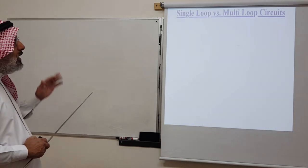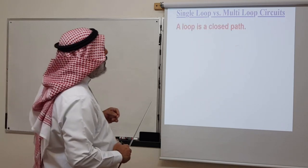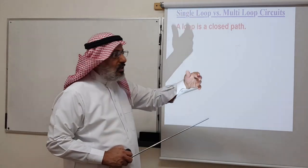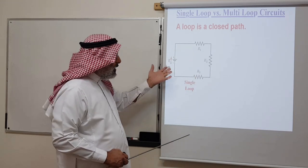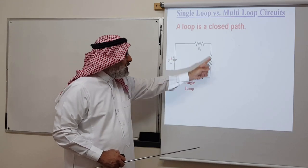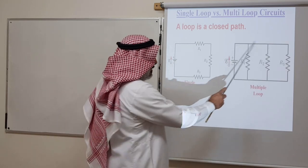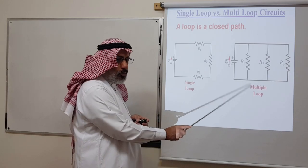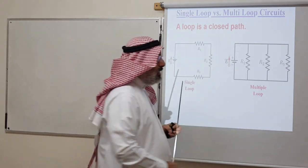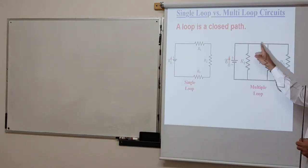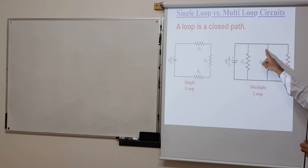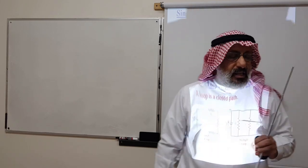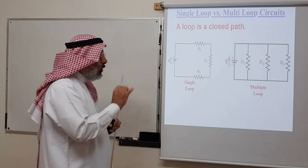Let's distinguish between single-loop and multi-loop circuits. A loop is any closed path in a circuit. A single-loop circuit has one single closed path for current to flow. A multi-loop circuit consists of many single loops. For example, a multi-loop circuit can contain six single loops — any closed path counts. One of our objectives is to calculate the currents in single or multi-loop circuits.